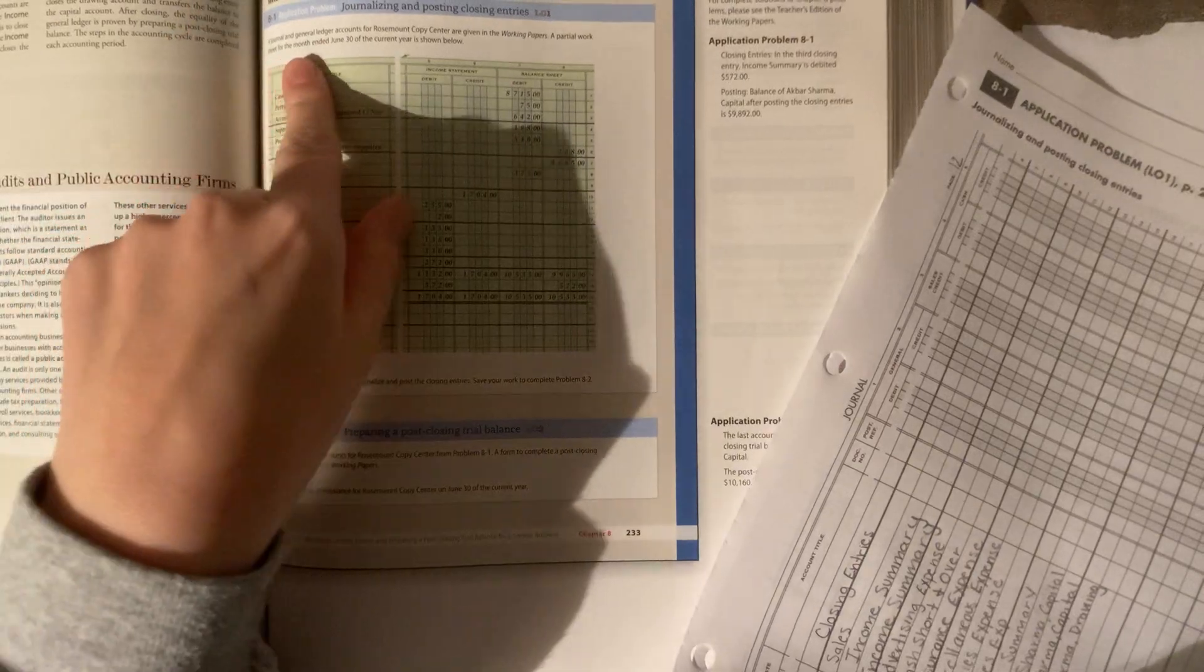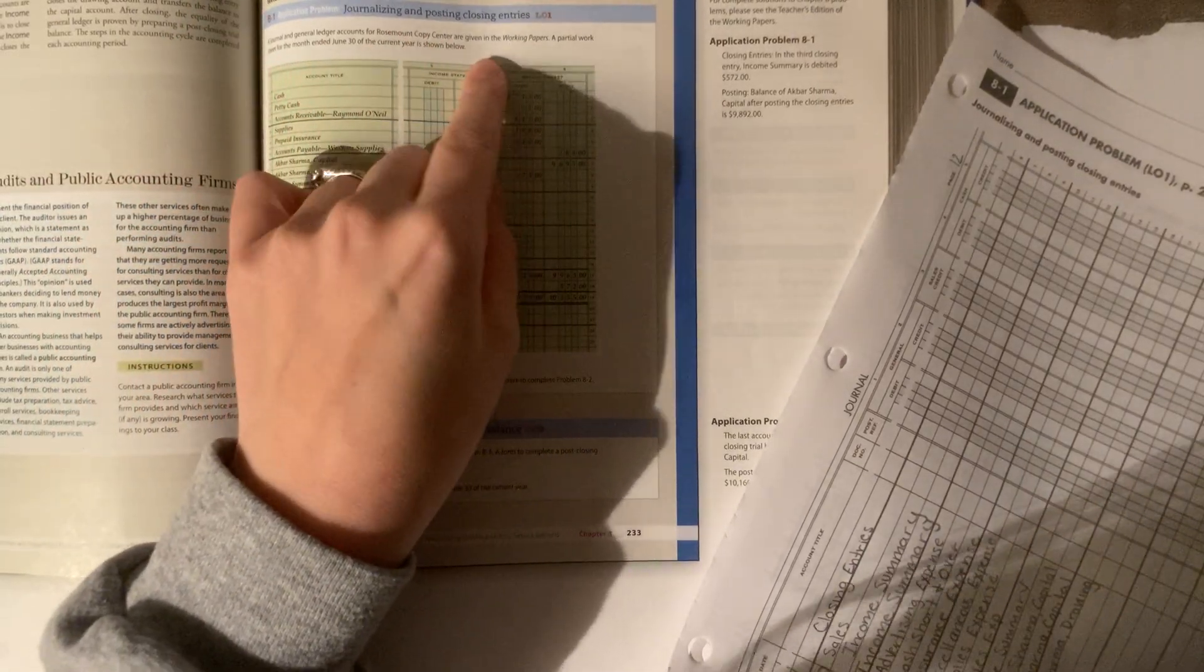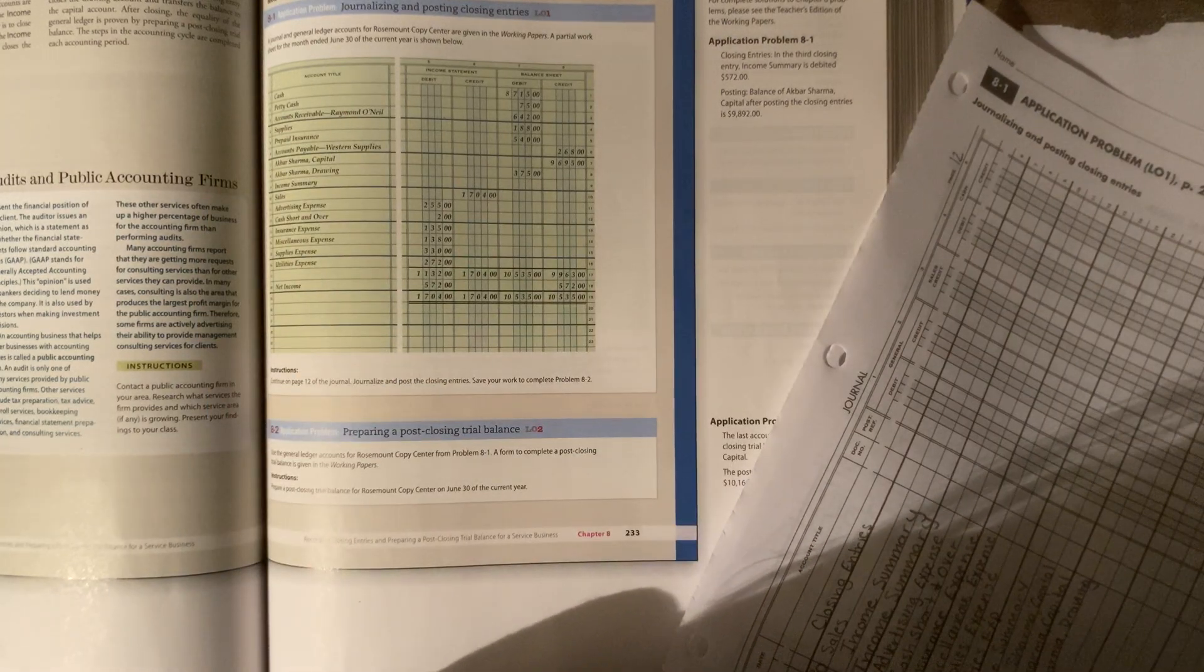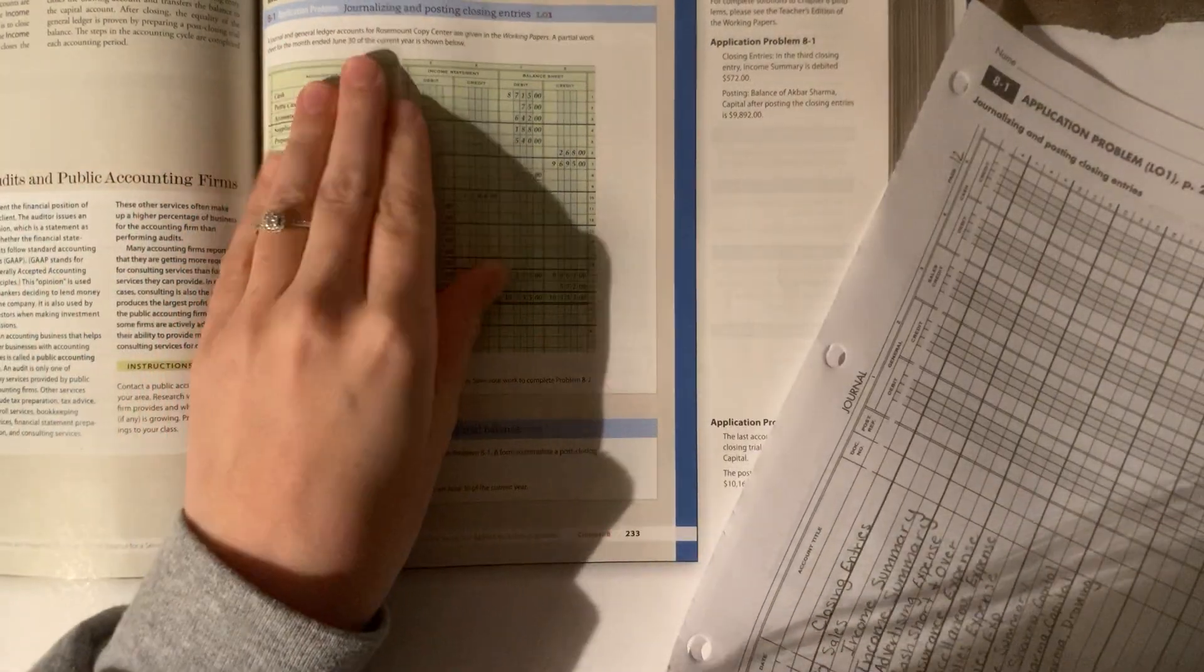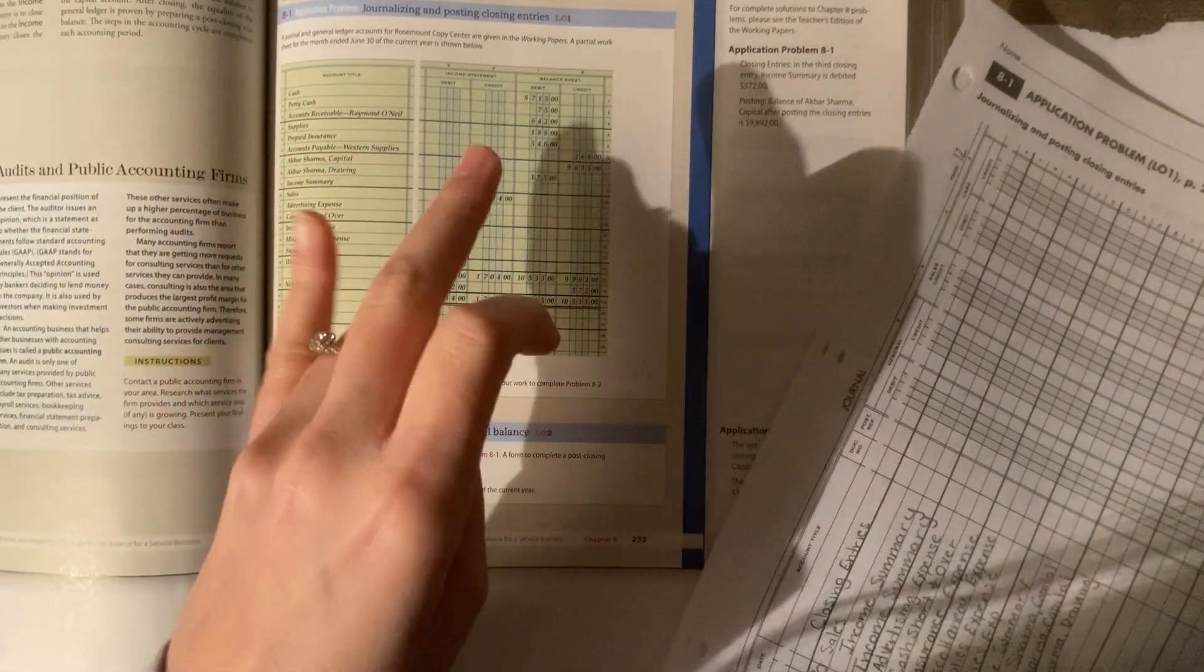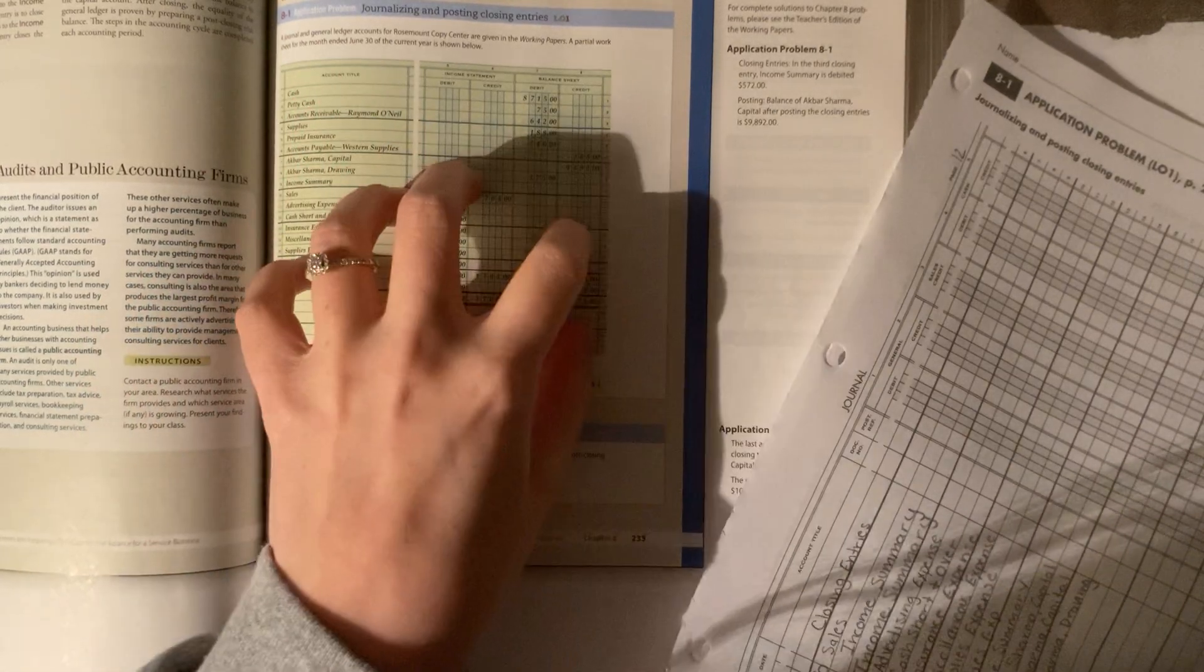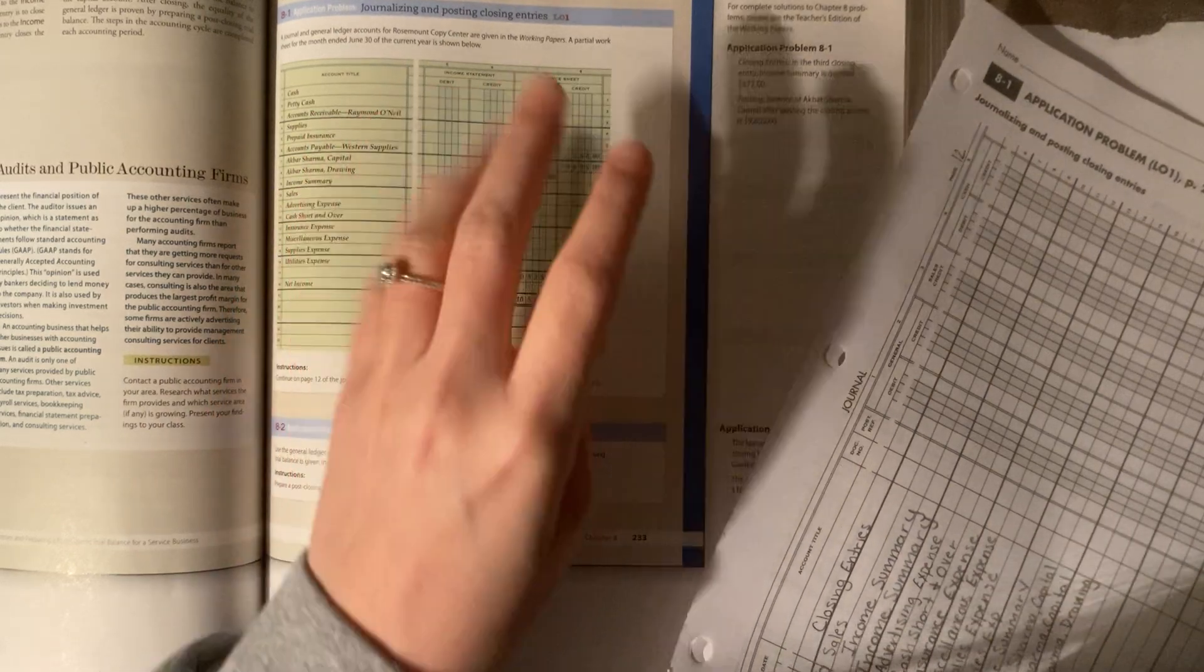So it says, a journal and general ledger accounts for Rosemount Copy Center are given in the working papers. A partial worksheet for the month ended June 30th of the current year is shown below. So this June 30th, they have a fiscal period of a month. So this is all the accounting information for that one month at this company.